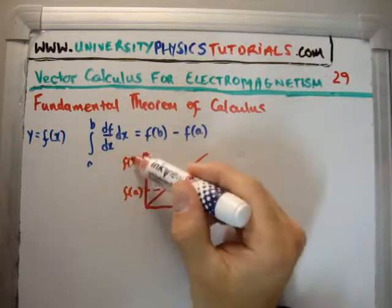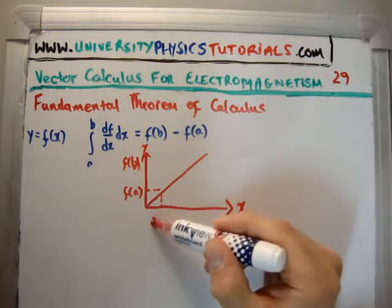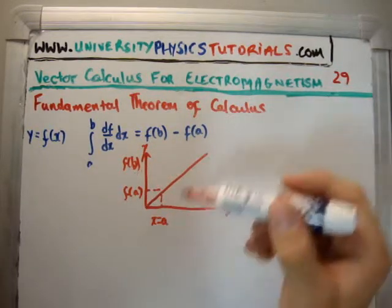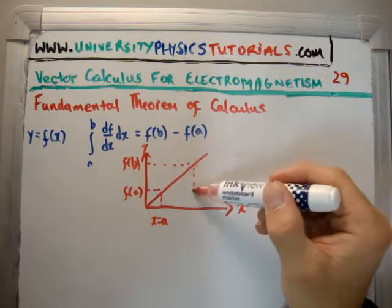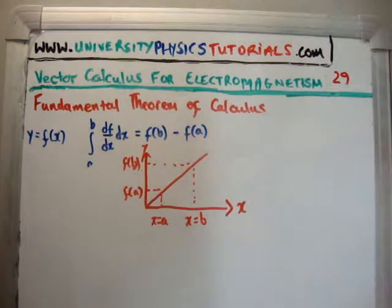So, this point here is f of a. This point here, we'll say, is f of b. And it's called y. So, there, there's x is equal to a. And, let's say, here, x is equal to b.